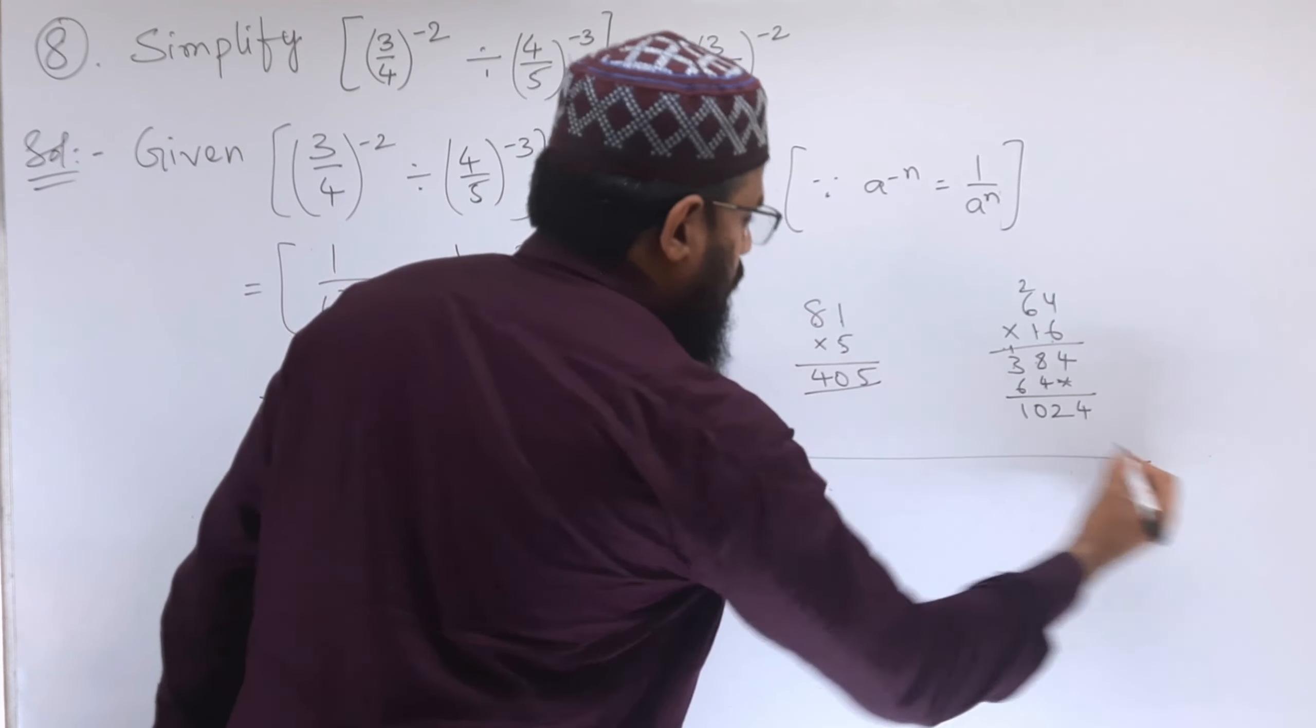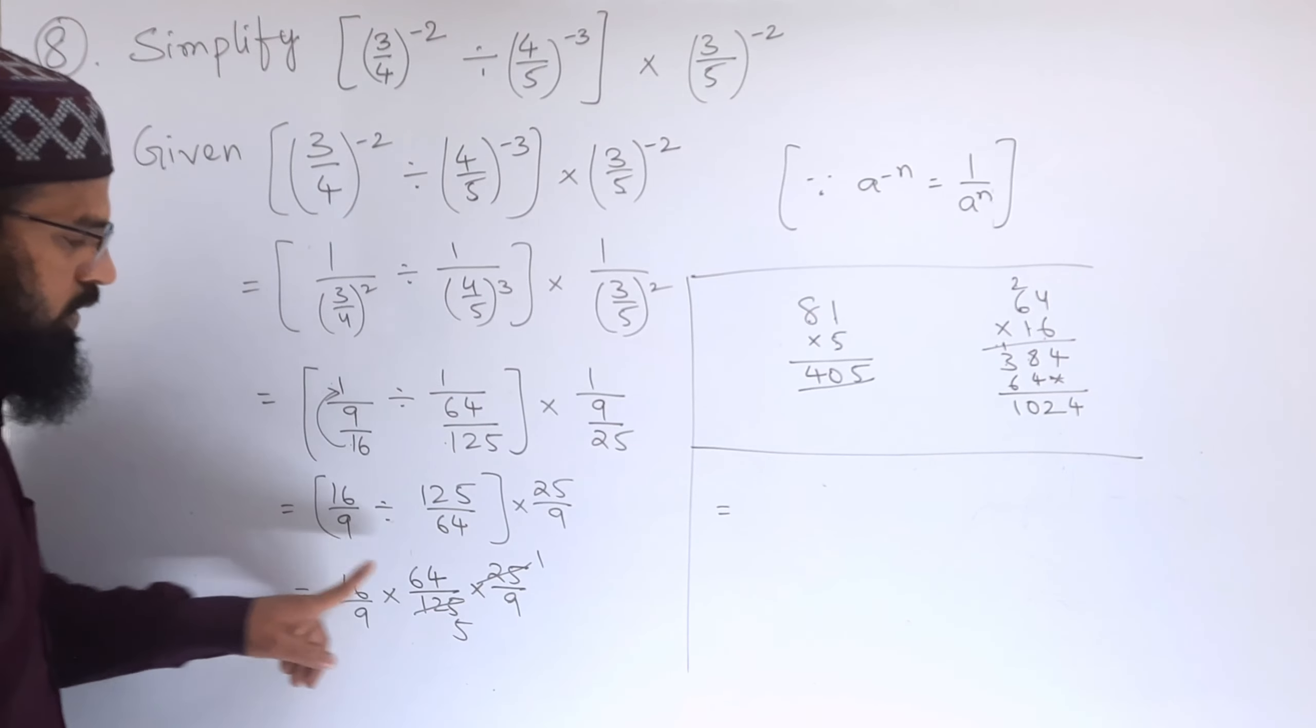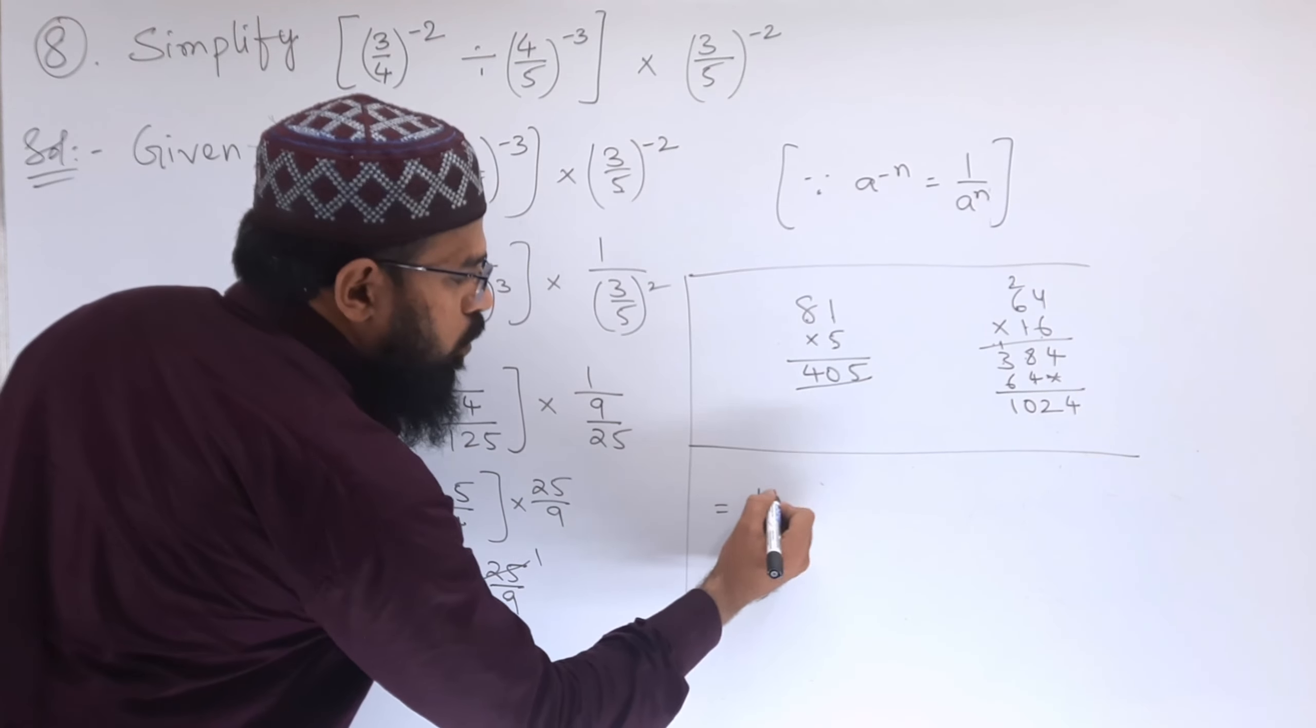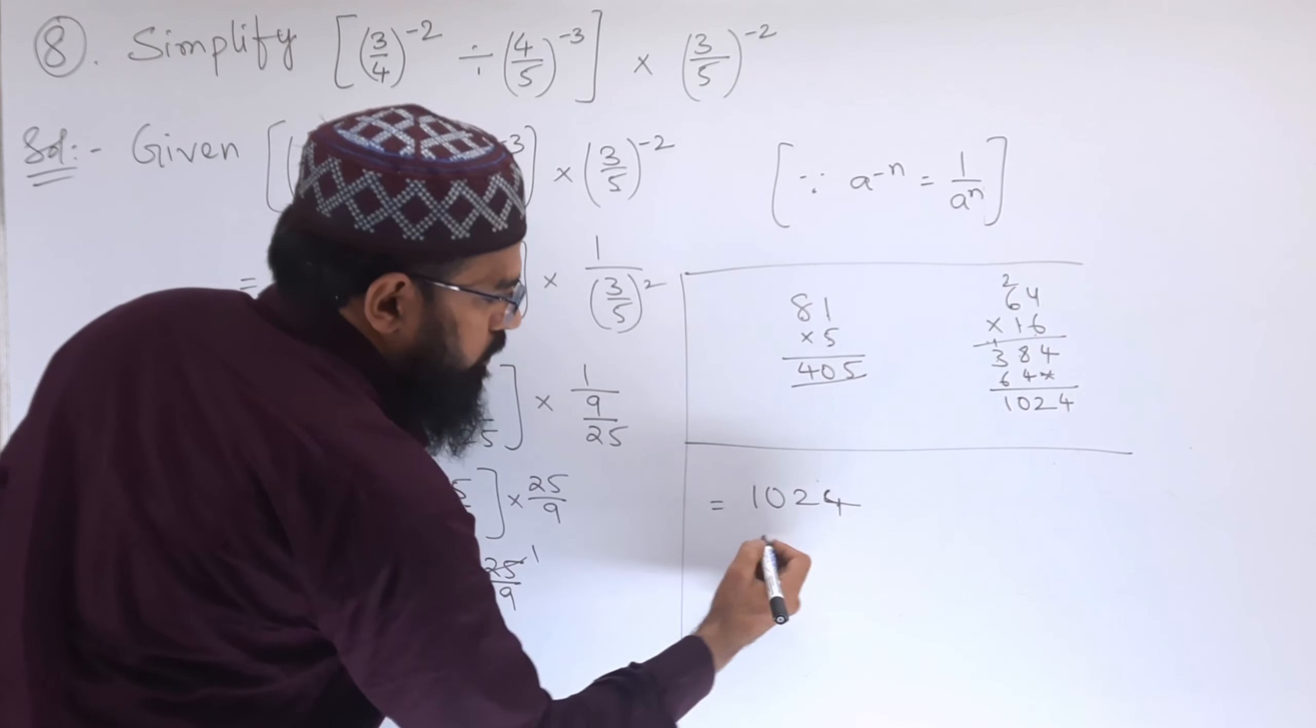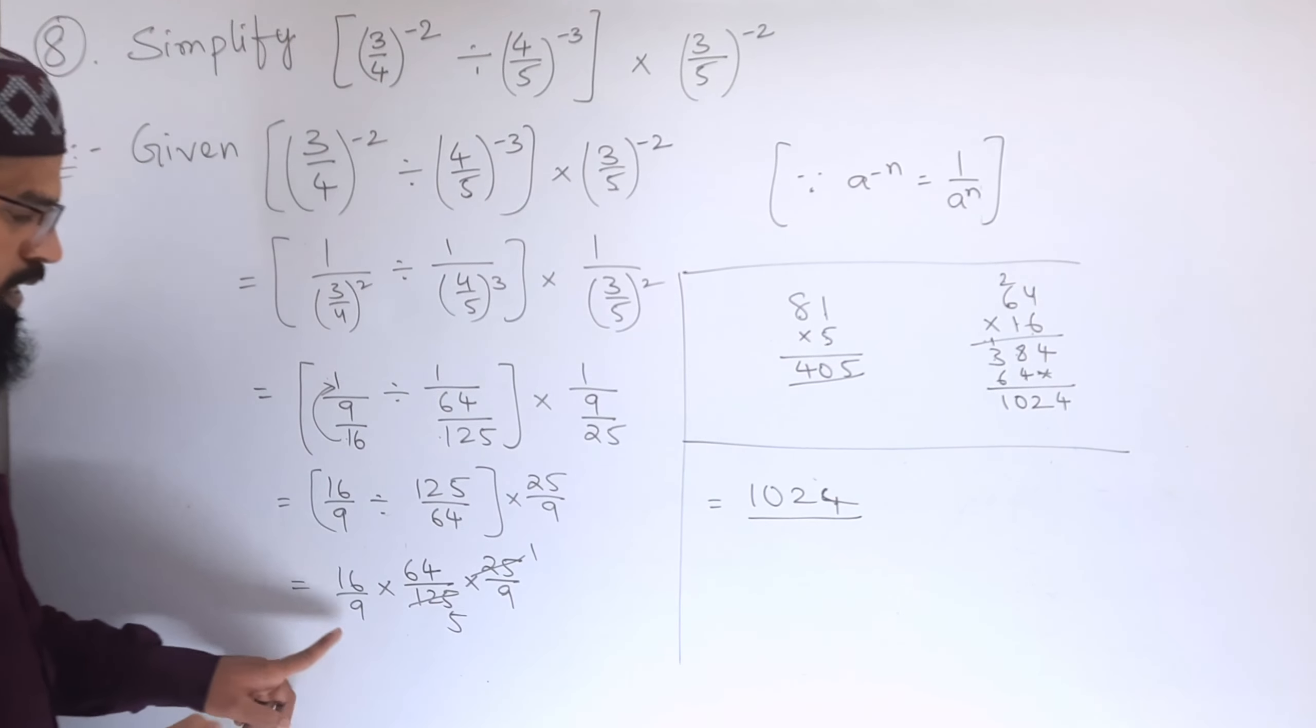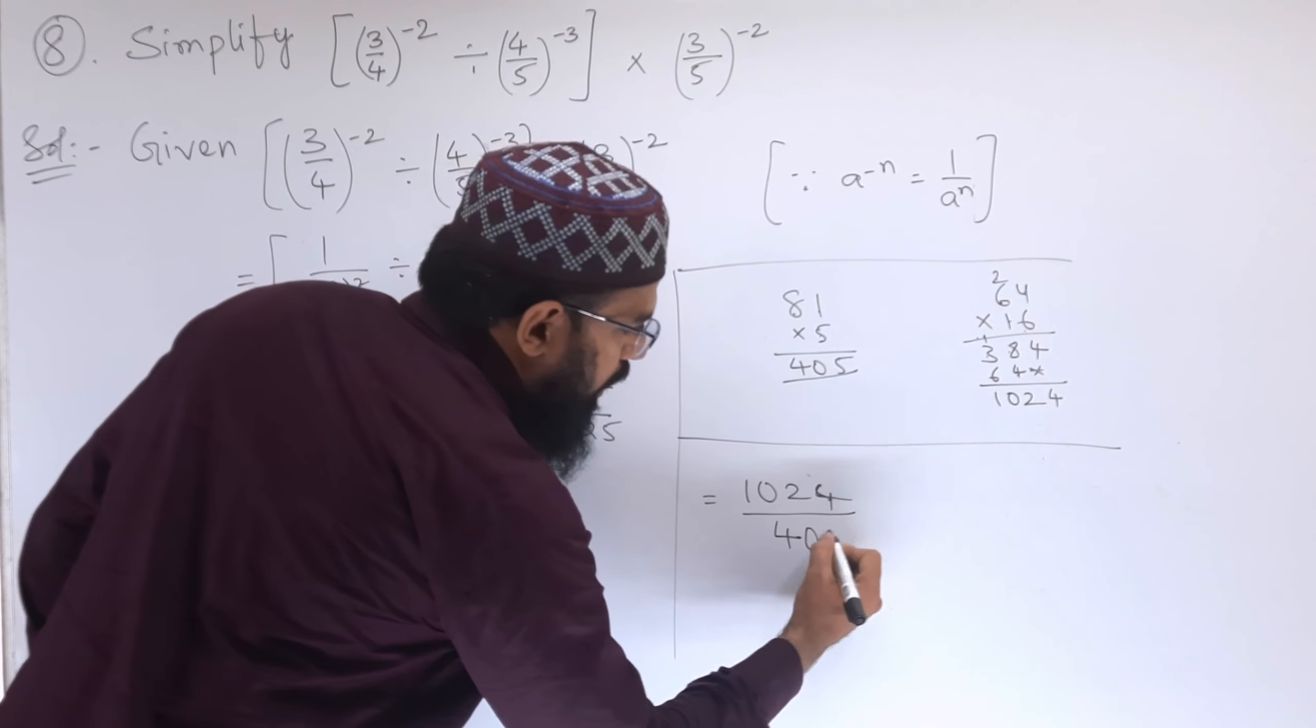Therefore, we have got the solution that is 16 into 64 is 1024 and 9 times 9 is 81, 81 into 5 is 405.